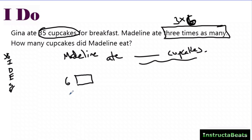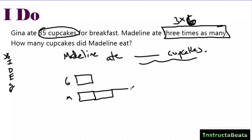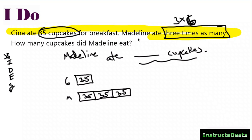So what I'm going to do is draw Gina and Madeline, and give them each one group to start. Then I fill in what I know: Gina had 35. Madeline ate three times as many as Gina, so Madeline had three groups — making them equal — meaning Madeline had 35, 35, and 35. So I'm comparing Gina and Madeline using multiplication. Madeline has three groups of 35. This is my tape diagram and it's based on the problem.